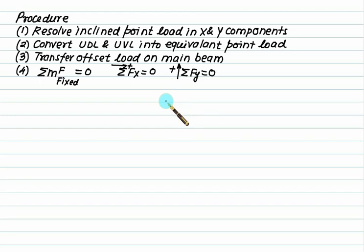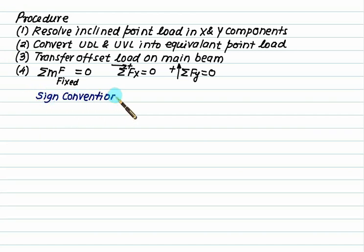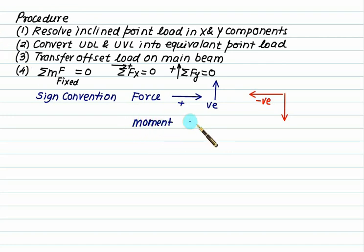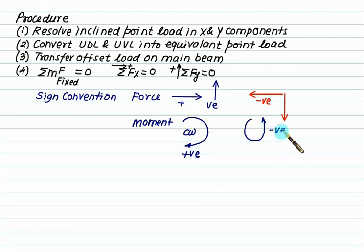If any answer is negative, you have to reverse the direction of that particular value. Before we solve the numericals, let's revisit our sign convention for forces and couples. Rightward force is taken as positive, upward force is taken as positive, whereas leftward and downward forces are taken as negative. For moments, clockwise is positive and anti-clockwise is negative.